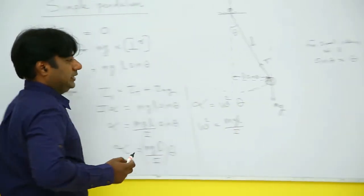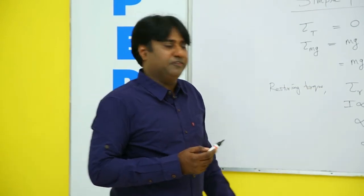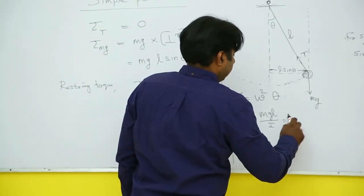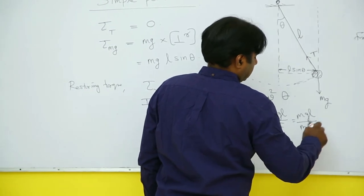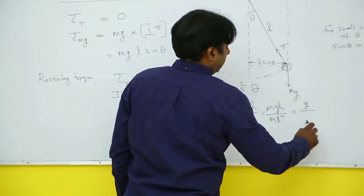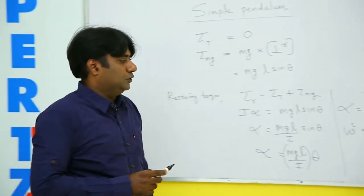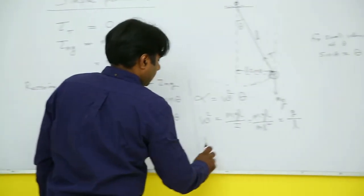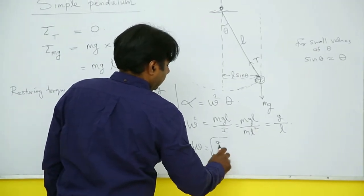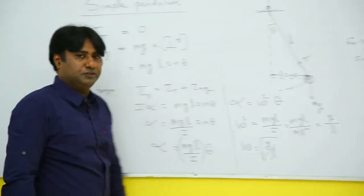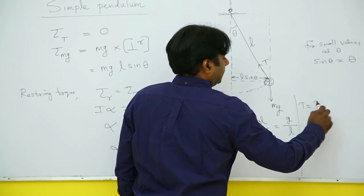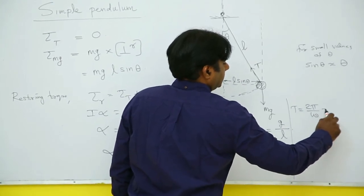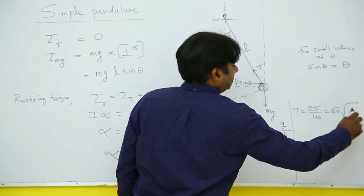Now what is I? I for a mass at a distance L from the axis is ML square. So it is MGL by ML square. MM cancels, one L remains so it is G by L. So what I get is omega square equal to G by L, or omega is root of G by L. Once you have omega as root of G by L, time period of oscillation I can write it here. T equals 2 pi by omega which is 2 pi into root of L by G.